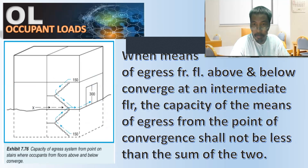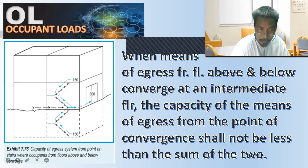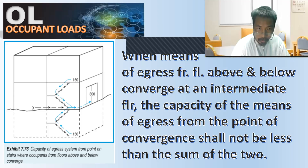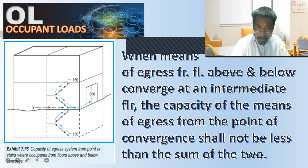Now, looking at the capacity of the egress system from a point where stairs converge — occupants from floors above and below meet at this exit. There are 150 occupants on the lower floor going up and 150 from the higher floor going down to the ground level outside the building. From this exit, the total is 150 plus 150, which equals 300.